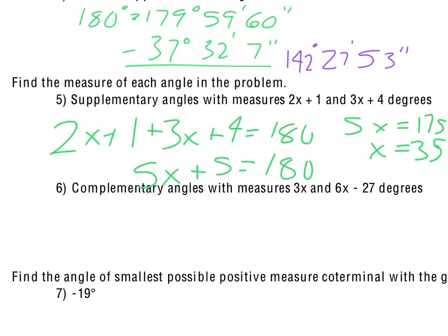We have to use the x equals 35 to plug that in to find the measure of those supplementary angles. When we plug that in to the 2x plus 1, 2 times 35 is 70, and add the 1, we get 71 degrees for one of our answers. We do the same thing for the 3x plus 4, and when we do that we get 3 times 35 being 105, add the 4, we get 109 degrees. It does make sense there that those would be the answers because 71 and 109 are supplementary.